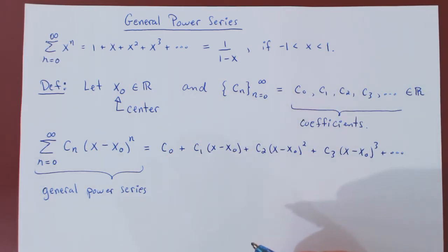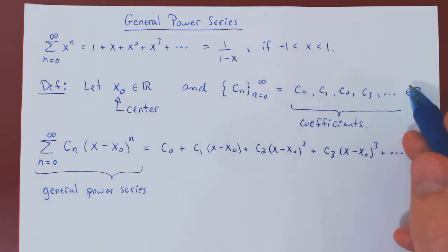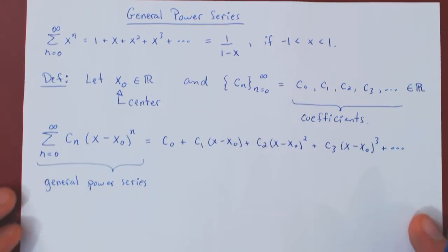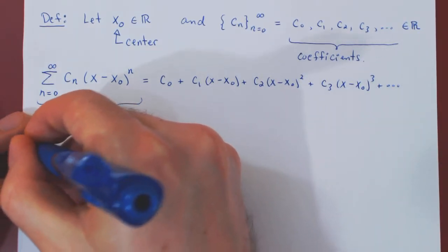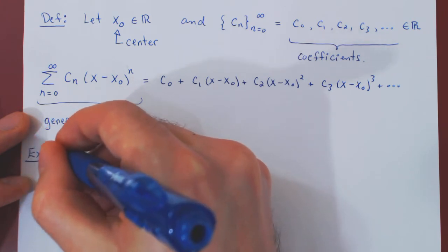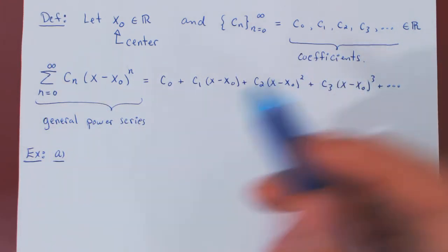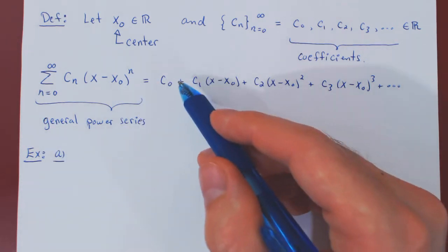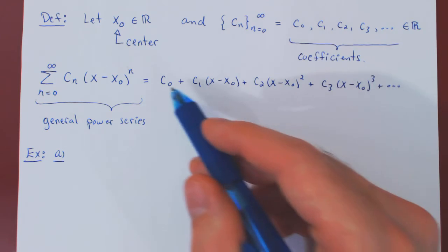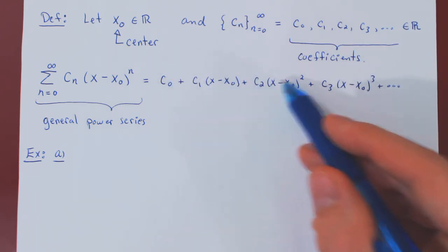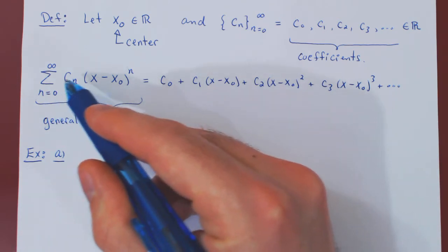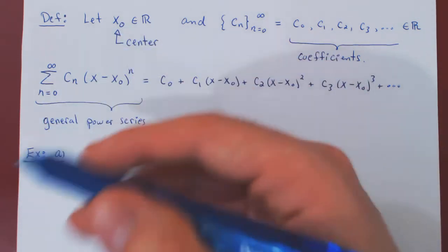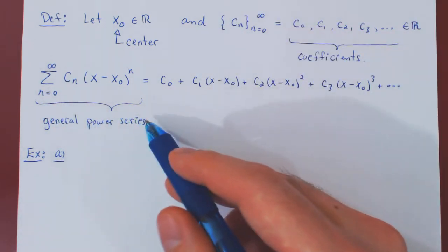It's worth noting that n could begin at 5, 17, or any value — this would still be a power series. Since the coefficients can be anything you want, you could pick the first few coefficients to be 0 and those terms would simply vanish. So the starting point of such a series is always up to you. No matter what starting point you choose, whether it's 5, 17, 34, and so forth, the result is always called a power series.